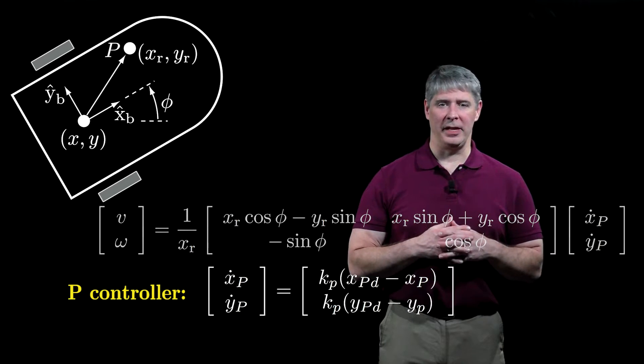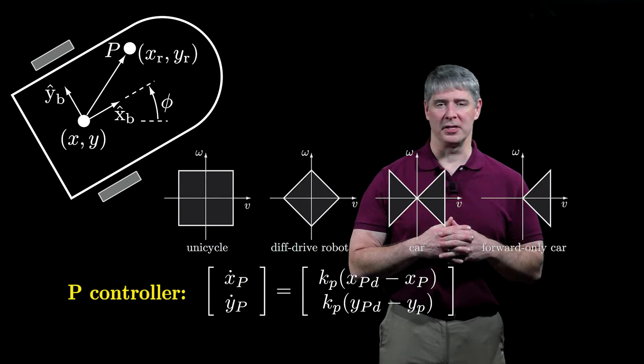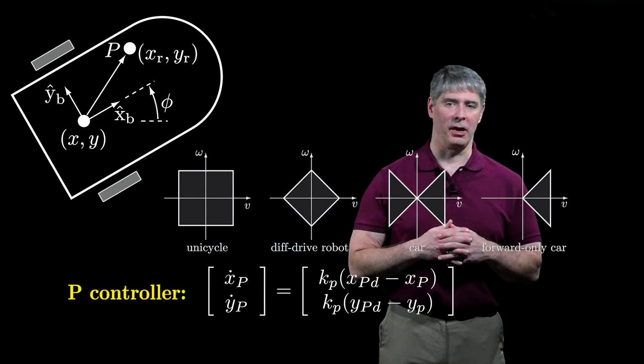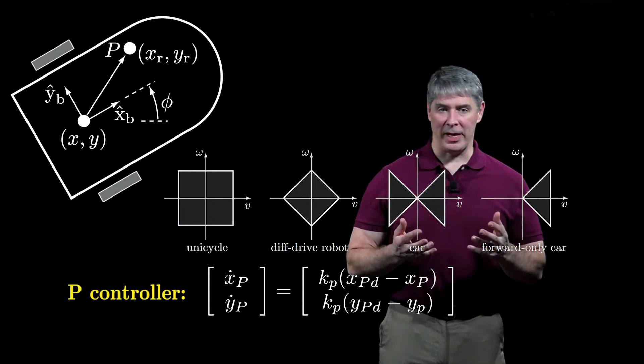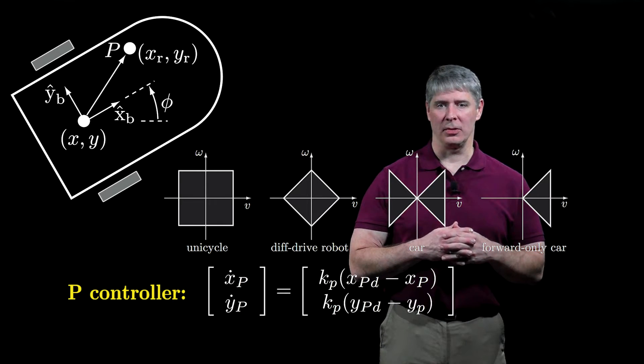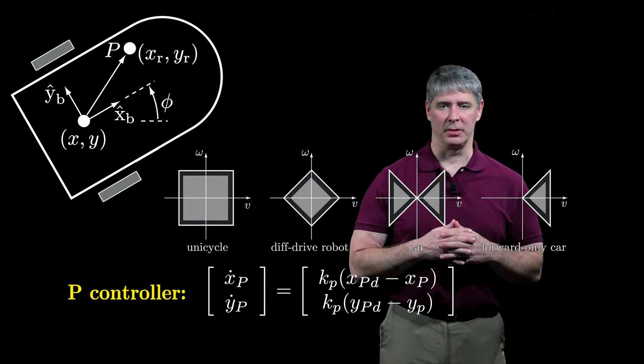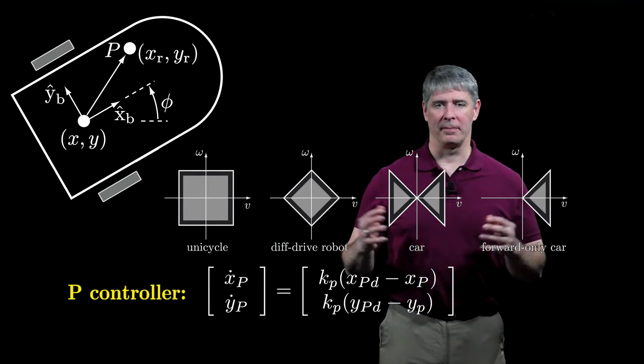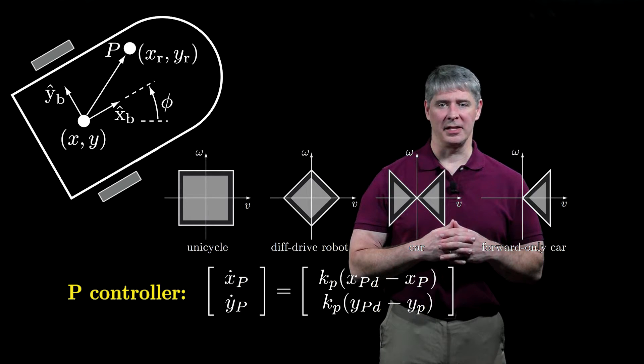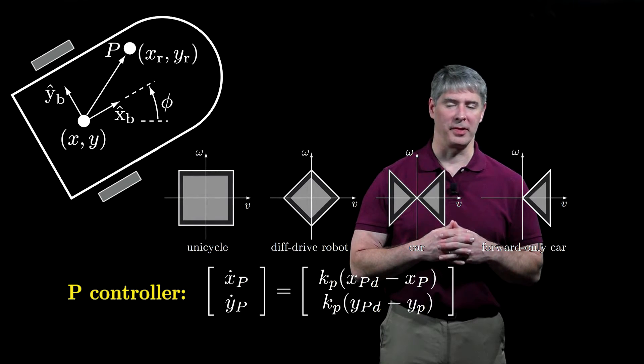The constraints on v and omega depend on whether the robot is a unicycle, diff-drive, or car. When initially planning the trajectory, the planner should use only a subset of the possible controls, such as those shown here. By doing so, the feedback controller has some extra control authority to make corrections to errors in trajectory tracking.